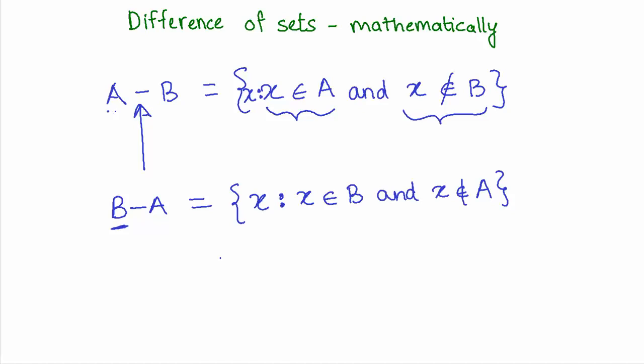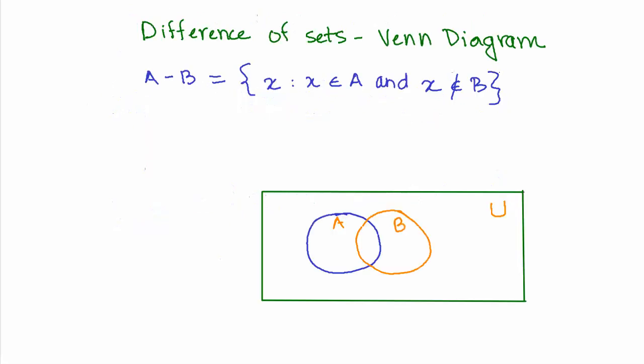Now let us try to look at representing the operation of difference of sets using a Venn diagram. And this is our statement for A minus B: all the elements that are present in A but not in B. So we have this universal set U over here, we have the set A in the green circle, the set B in orange.